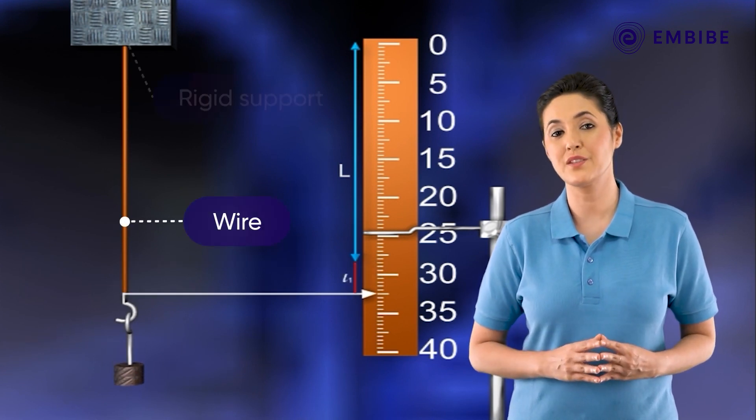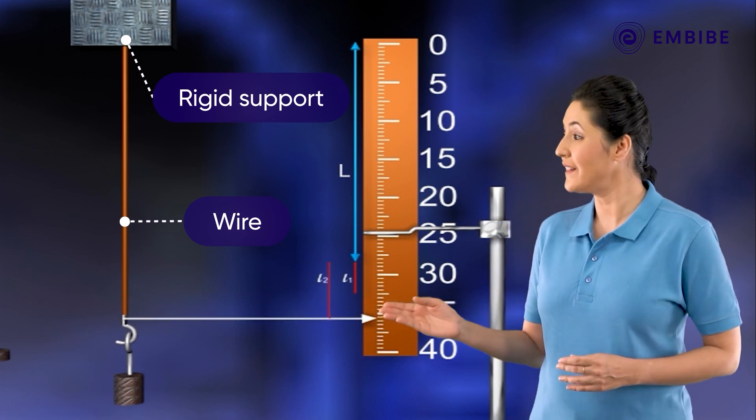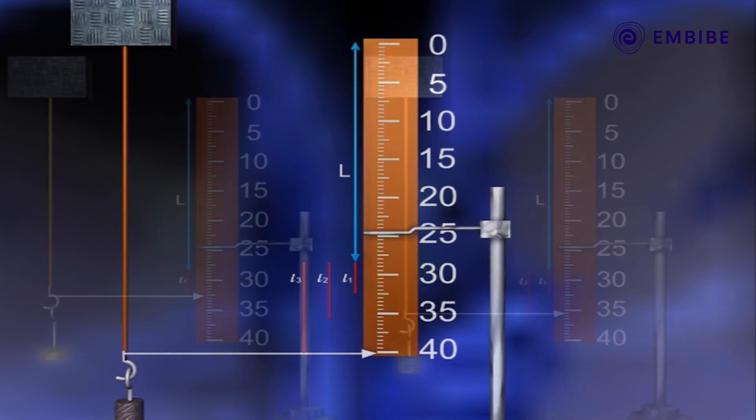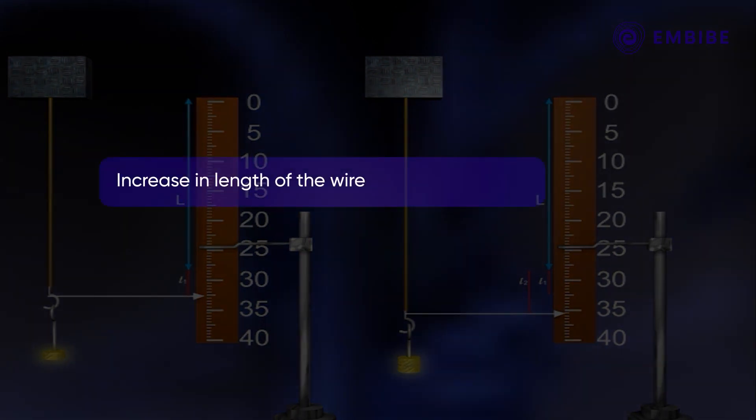By suspending weights at one end of the wire with the other end suspended to a rigid support, we can determine the increase in the length of the wire with the help of a scale.